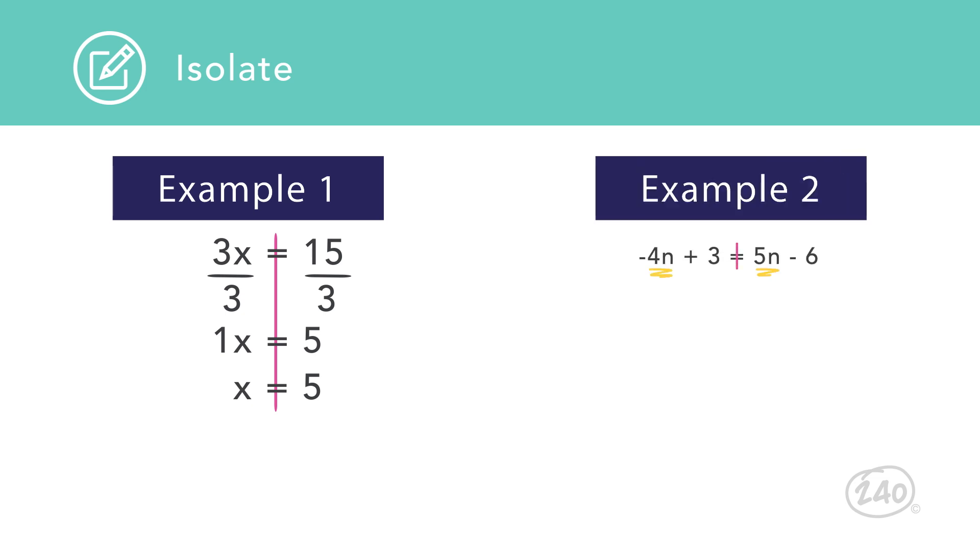Example 2 has variables on both sides of the equal sign. All of the n's must be moved to the same side using inverse operations before you can isolate the variable.